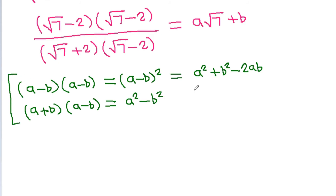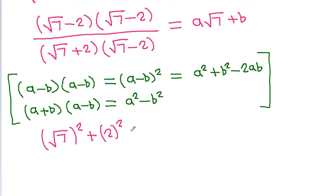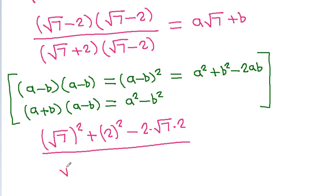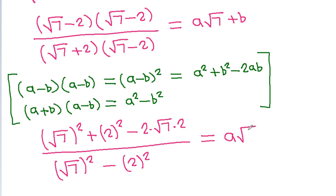So this will be equal to (√7)² minus 2 times (√7) times 2, and this equals (√7 - 2) squared, which is (√7)² minus 2². This is equal to a times (√7) minus b.